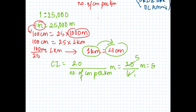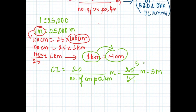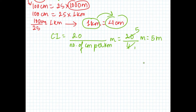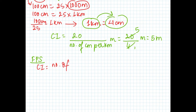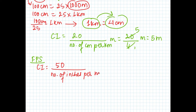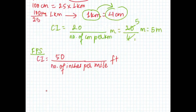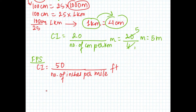So CI in the IS system is 5 meters. For the FPS system, the formula for CI is: CI equals 50 divided by number of inches per mile. Similarly, we will do the same calculation for this system.